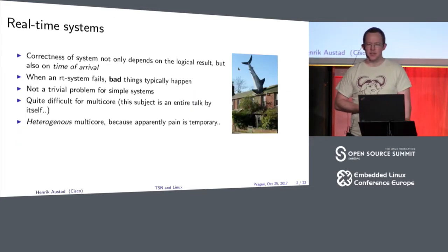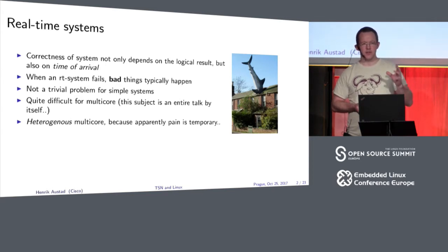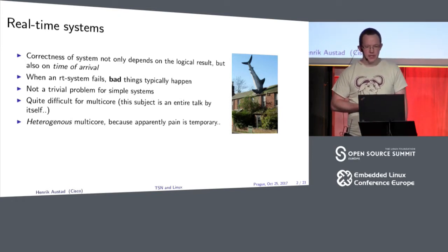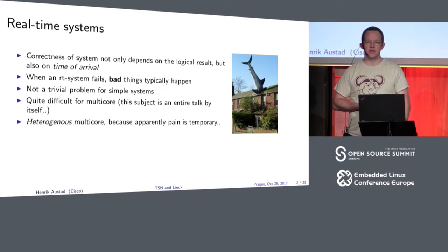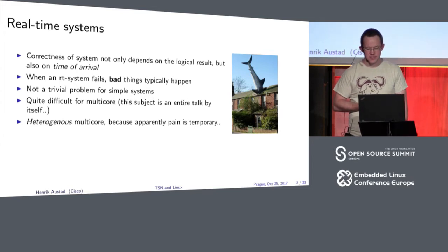A real-time system is a system where the end result is not only the logical result, but also the time at which the result was produced. It doesn't matter if you plan the perfect trajectory for your robotic arm — if you're two seconds late, you run into something. This also maps into the audio domain. Another aspect is the consequences of failure: when a normal system fails, the user of the spreadsheet gets annoyed; in a real-time system, the user gets dead.